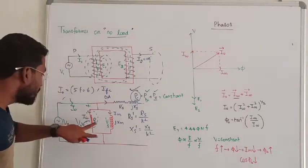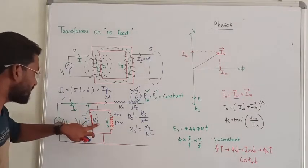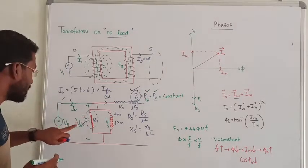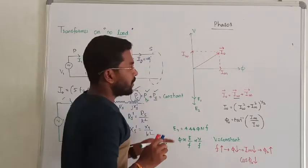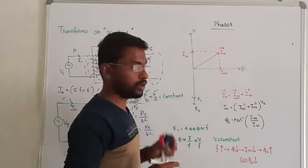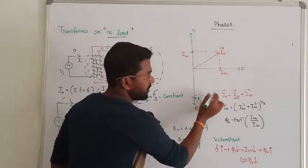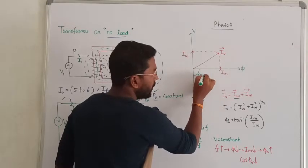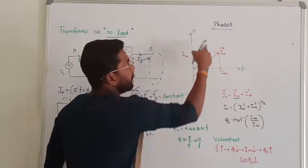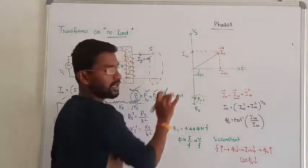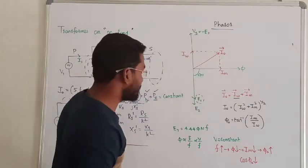There is a resistance carrying winding current Iw. For a resistor, the phase difference between voltage and current is 0 degrees. According to Lenz's law, the induced EMF is 180 degrees opposite to the supply voltage, so we can write Vs = -E1.